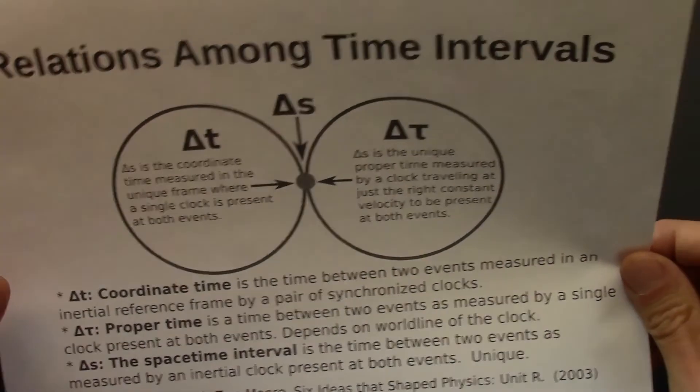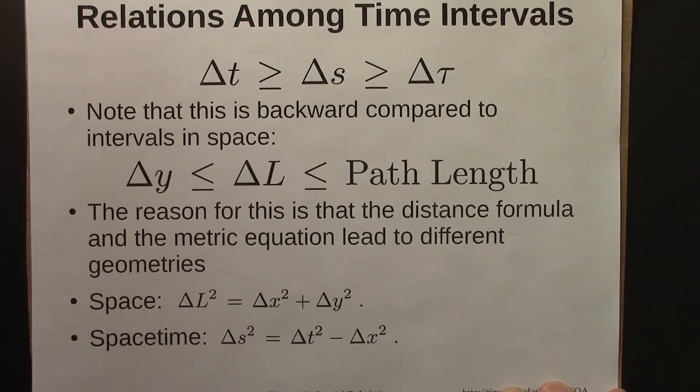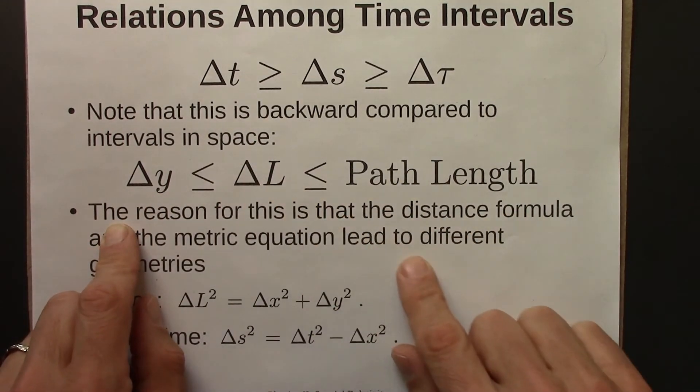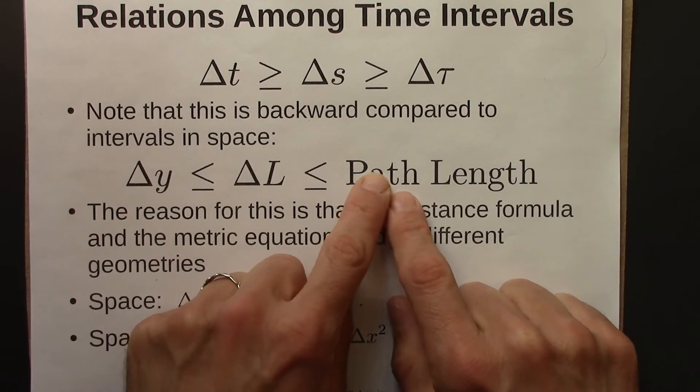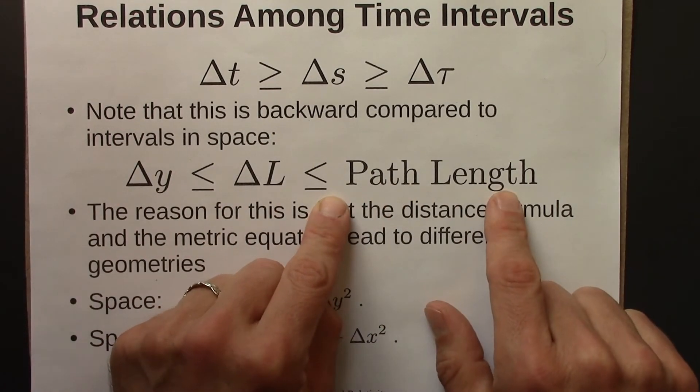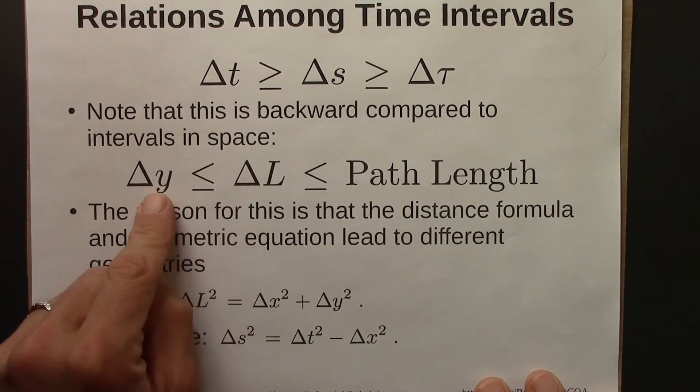So then, by working with the equations for world lines and paths in space, we came up with these relationships. Let me say this one first. So the path length, now this is for space. For a curved path is going to be longer than a straight-line path, which is going to be longer, or equal to, one of the coordinates. I wrote it in this case as y.